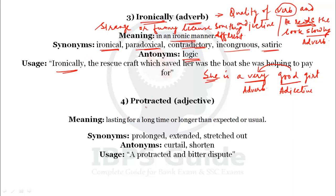Our next word is 'protracted.' Protracted is an adjective — it describes the quality of a noun. Protracted means lasting for a long time, longer than expected or usual. When something lasts more than our expectation, longer than we anticipated, we call it protracted. Synonyms: prolonged, extended, and stretched out.